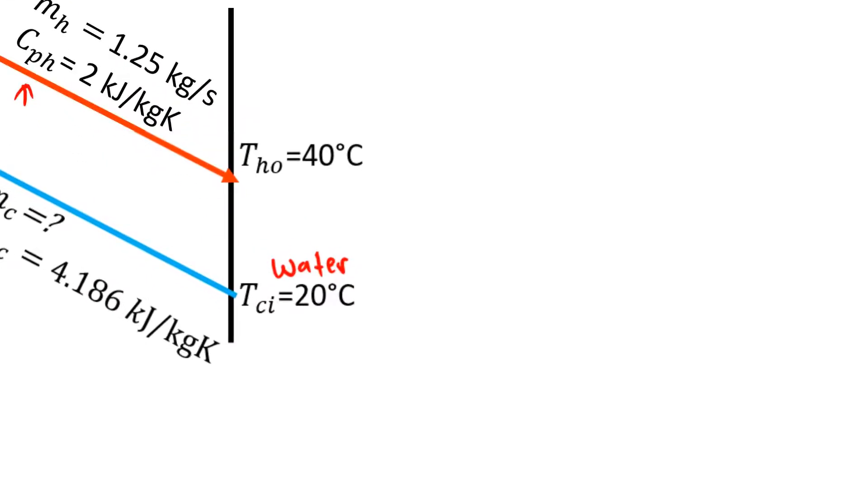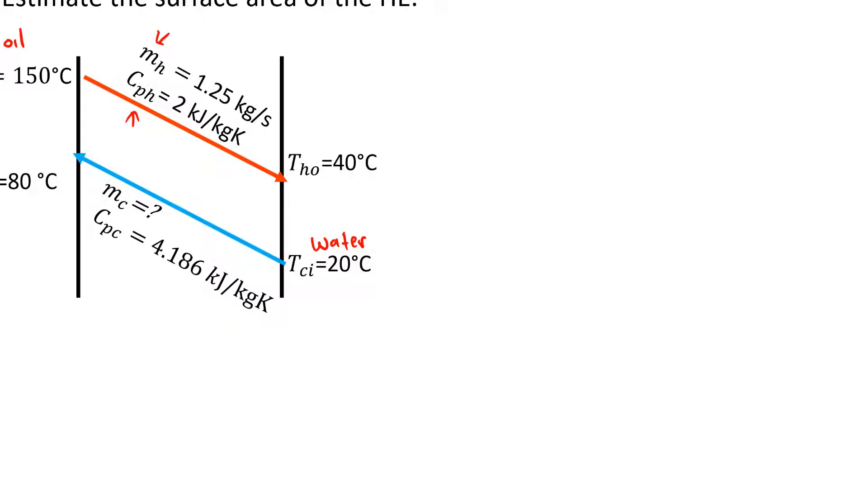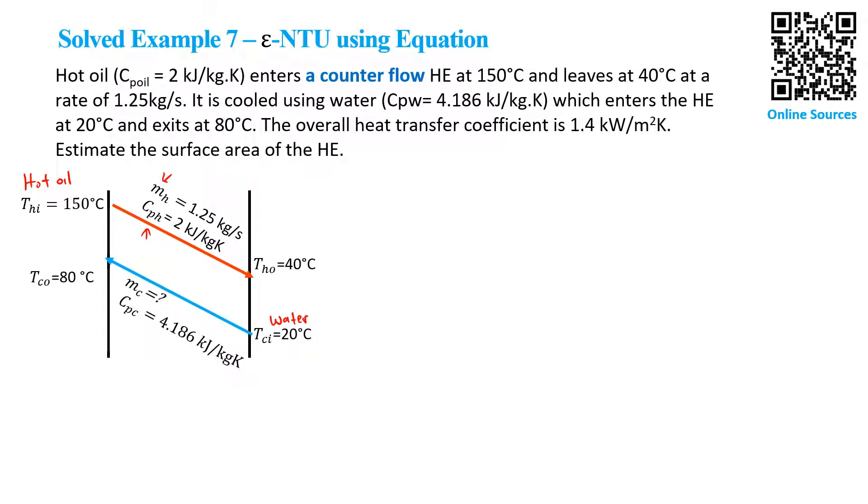...which is the CP of water, 4.186 kJ per kg·K. But we don't know the mass flow rate of water, so that's something we need to calculate.